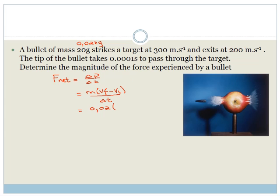The final velocity is 200 minus the initial velocity is 300 over the change in time, which is 0.0001.